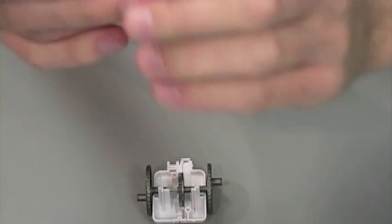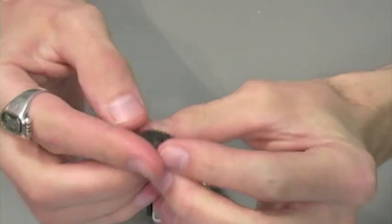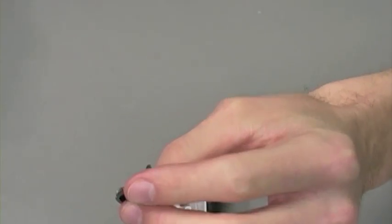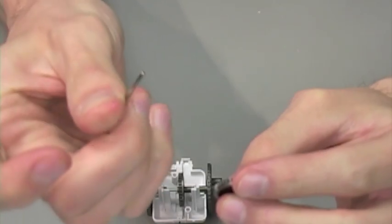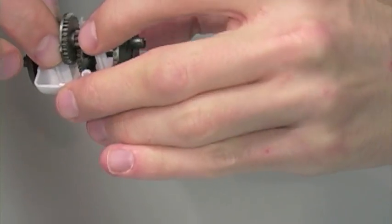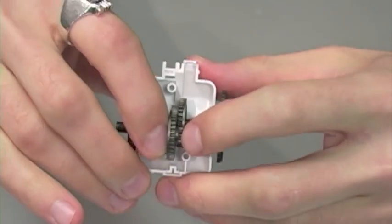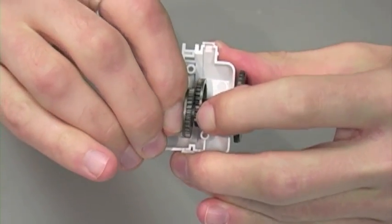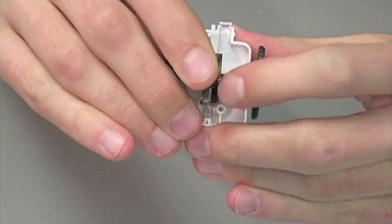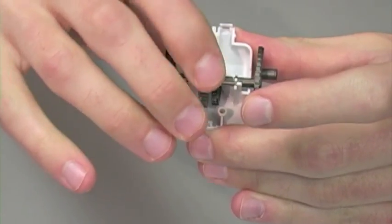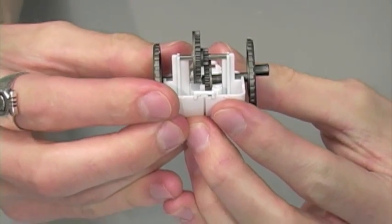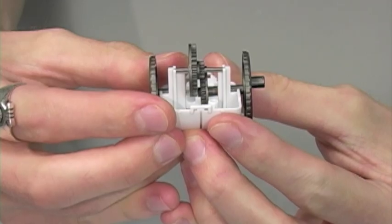For step 3 we're going to take part B14 and our last remaining small shaft and simply pop this into position on top so that it looks like this. Step 3 complete.